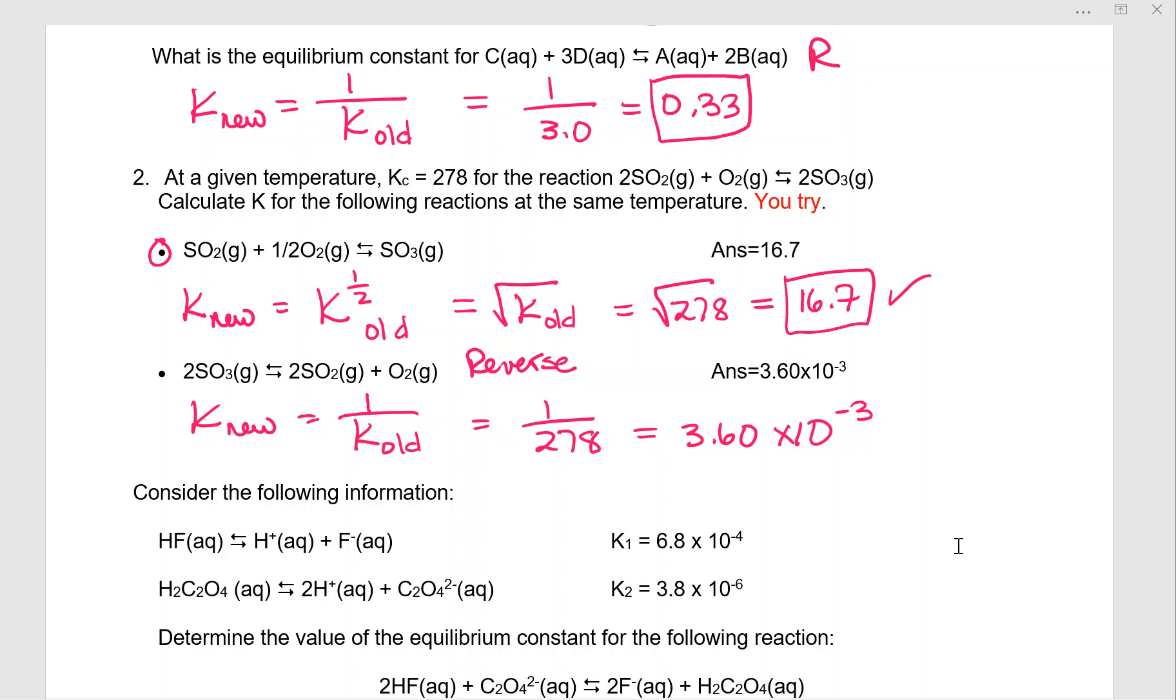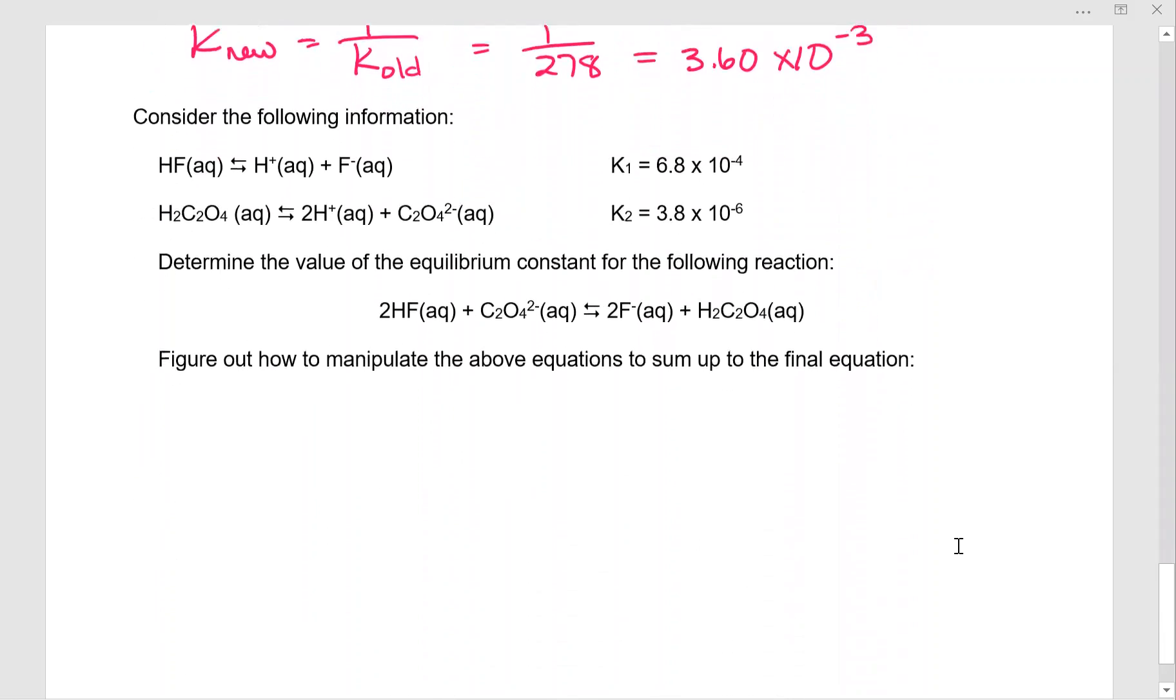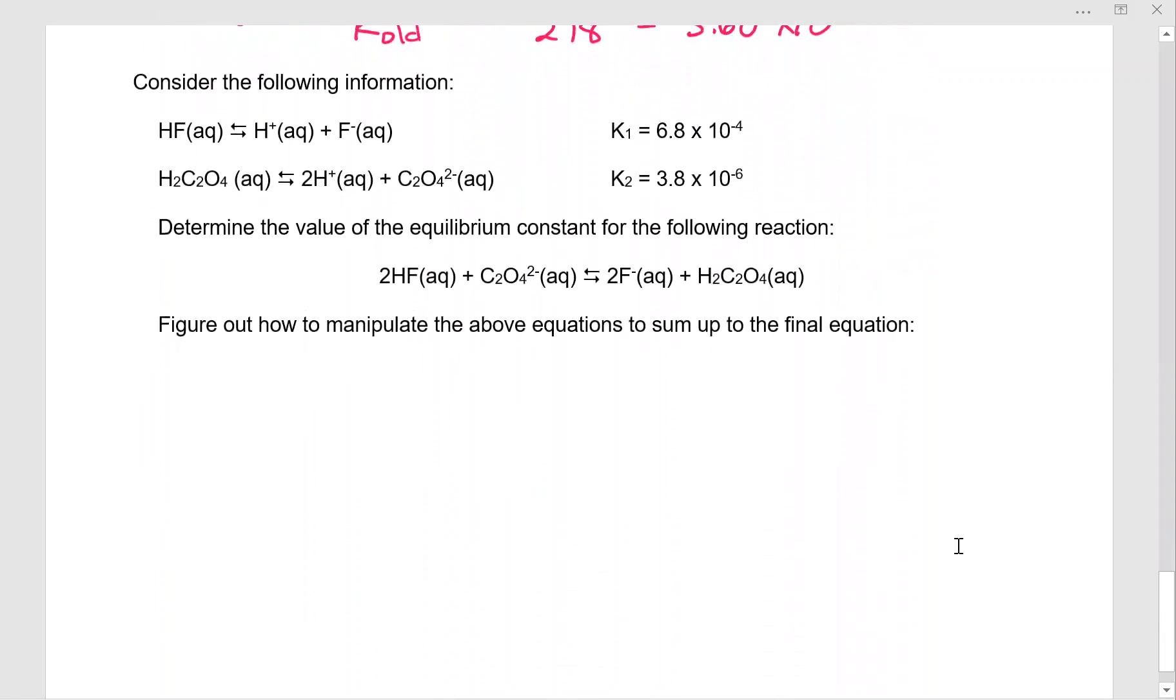The other way that you will see these problems on the AP exam is they'll give you a set of equations. So we have this set of reactions, HF aqueous dissociates to form H plus and F minus. And then we have oxalic acid, that's the H2C2O4 dissociates to form 2H plus and C2O4 2 minus. And we're given two equilibrium constants.